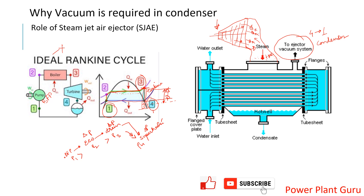That is why we need something at the exhaust to pull — to pull the air and non-condensable gases — so that steam coming in condenses properly on the tubes and the thermodynamic cycle works as intended. This is the fundamental reason why an ejector system is required.